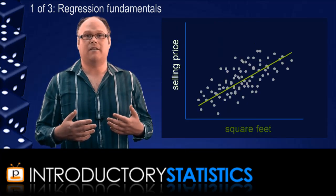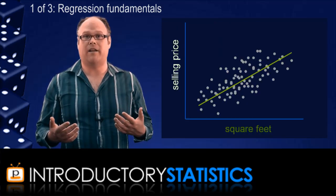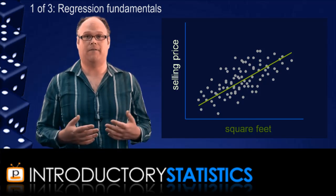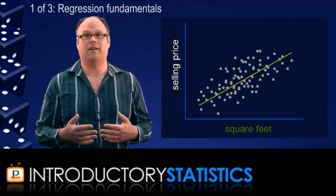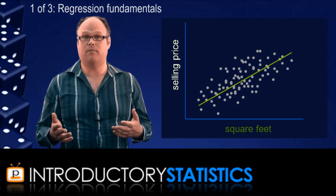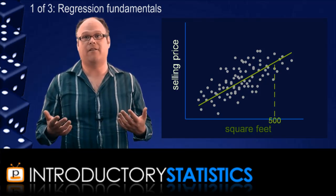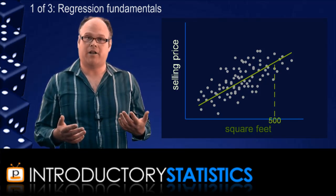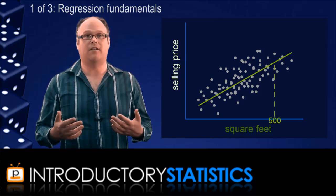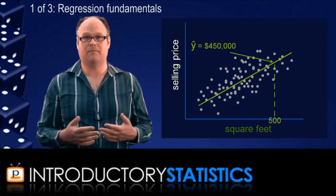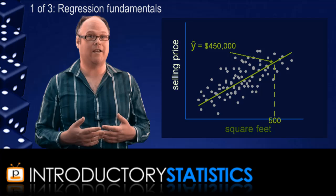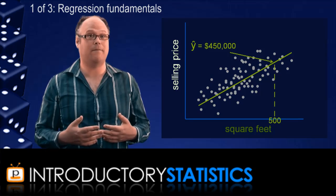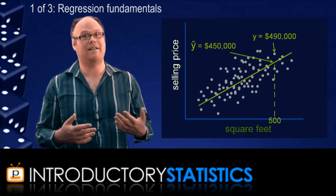Now notice that in the sample, there is usually a difference between the observed value for the response variable and the value predicted by the regression line. Let's just take one point for example. If a house is 500 square feet, this regression analysis would predict that the house would sell for $450,000. But look, in the data, there was a house that was 500 square feet, but it sold for $490,000.